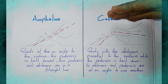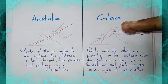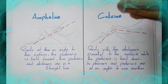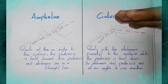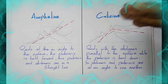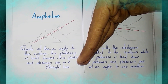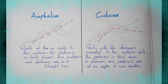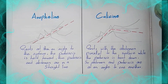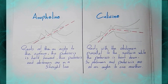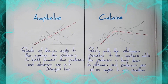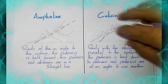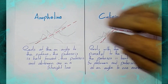The culicine mosquito rests with the abdomen parallel to the surface while the proboscis is bent down. You can see the proboscis and abdomen are at an angle to one another. Now you can differentiate anopheline and culicine mosquitoes using their resting position.